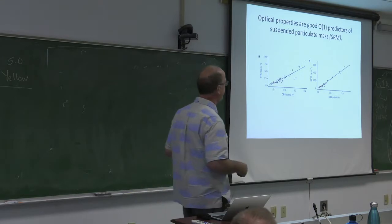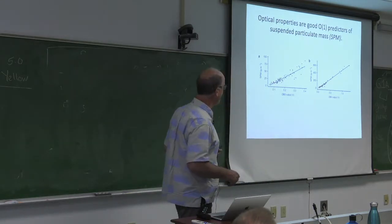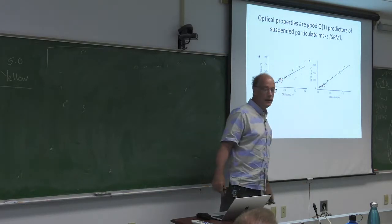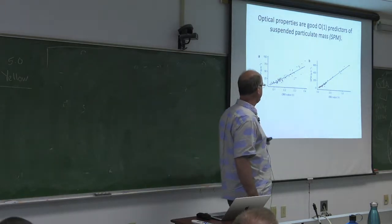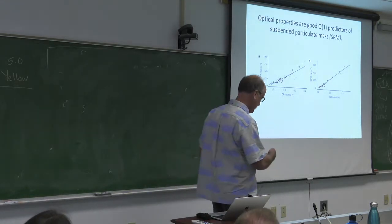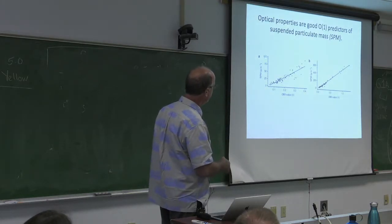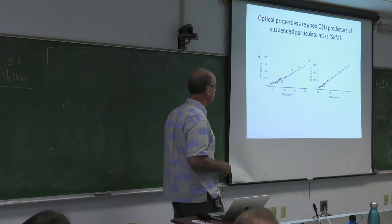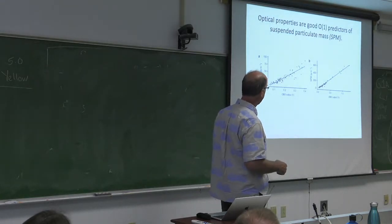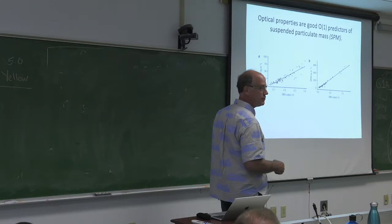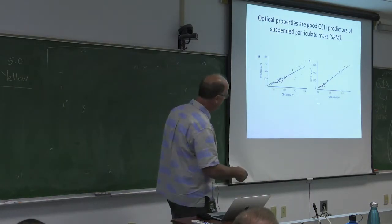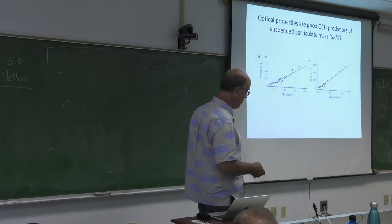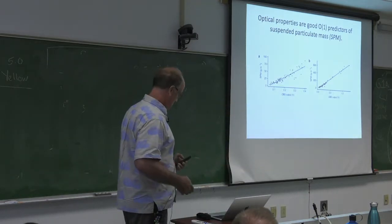So what this means is that optical properties are good order one predictors of suspended particulate mass. This is from some recent work that we did in the West Sea of Korea. And what it shows is output of an optical backscatter sensor, that's what the OBS means in volts, versus the measured suspended particulate mass in grams per meter cubed. And it's just from two different field campaigns. One, the concentrations were lower, it was in the springtime. But you see a good linear relationship. And then also you see a good linear relationship from the autumn when we had higher suspended sediment concentrations and higher OBS outputs.